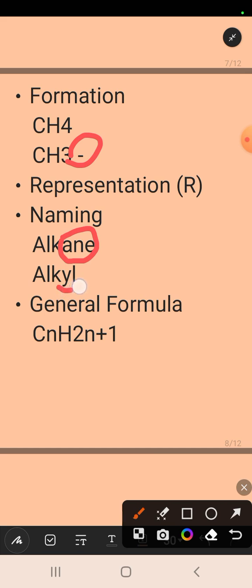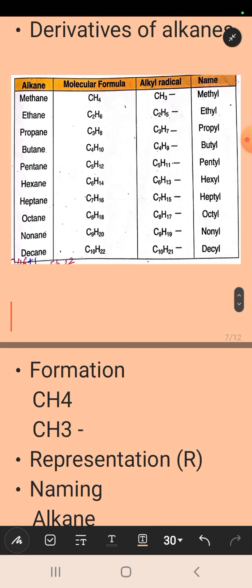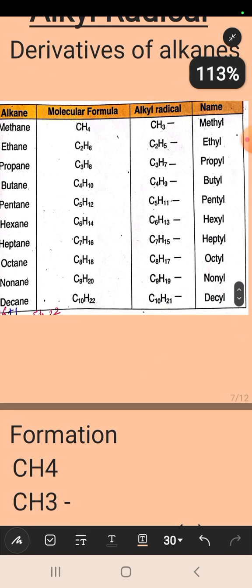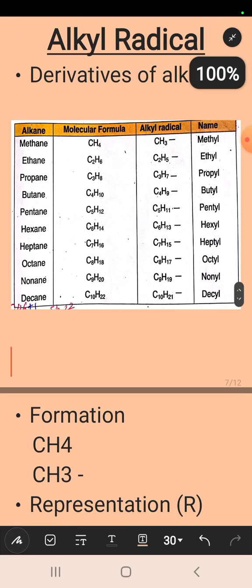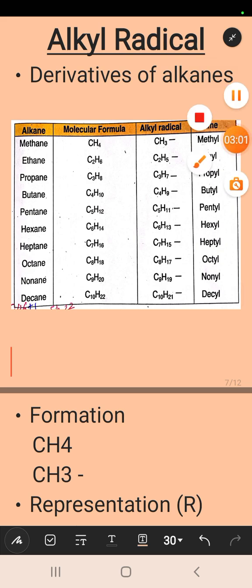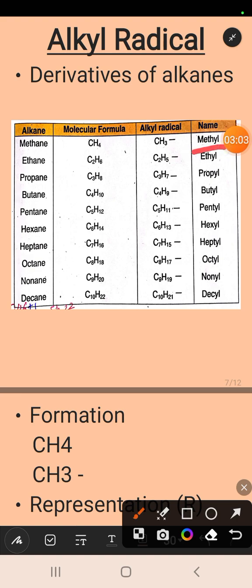For example, the first alkane is methane. If we form its alkyl radical, the name changes to methyl radical. We replaced 'ane' in methane with 'yl'. In the same way, ethane gives us ethyl radical, and propane gives us propyl radical.